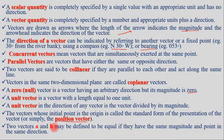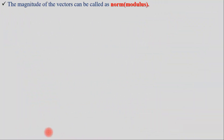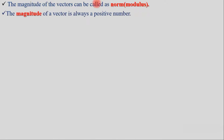Two vectors are defined to be equal if they have the same magnitude and point in the same direction. The magnitude of a vector can also be called the norm, length, or modulus. The magnitude of a vector is always a positive value.